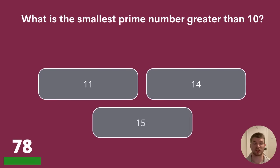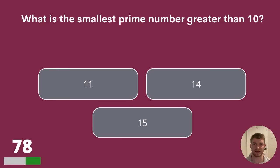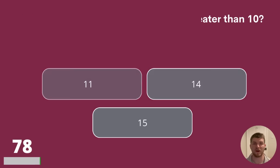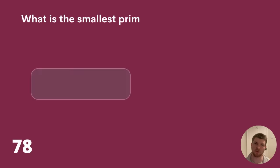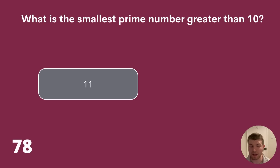Question 78. What is the smallest prime number greater than 10? 11, 14, or 15? We found out earlier that the smallest prime number in general is 2. The smallest prime number greater than 10 is 11.